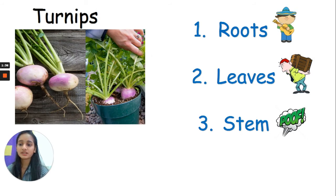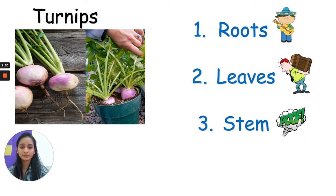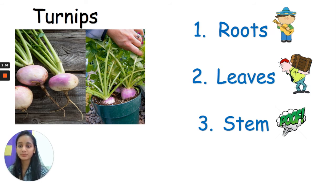The next one is turnips. Look at it carefully — look at where they're being taken out from and identify what they could be. The options are: one for roots, two for leaves, and three for stem. One, two, three. If you were strumming a guitar, that's absolutely correct — they are the roots of the plant. Good job everybody!